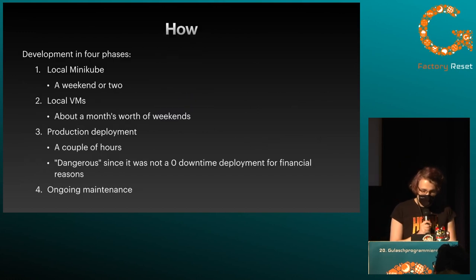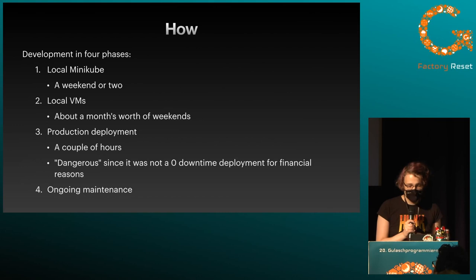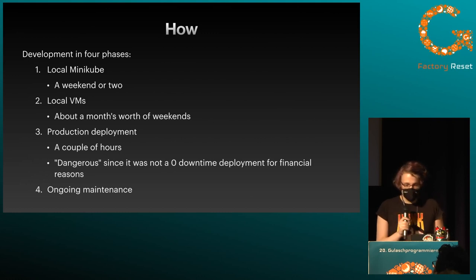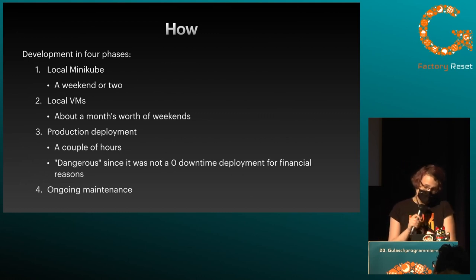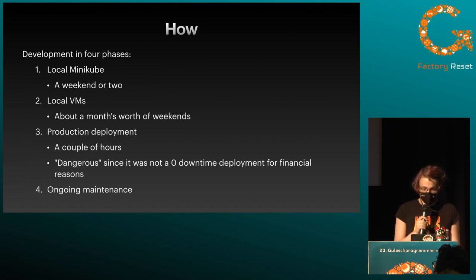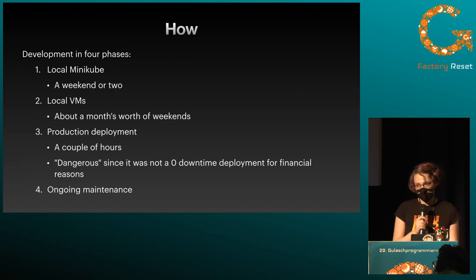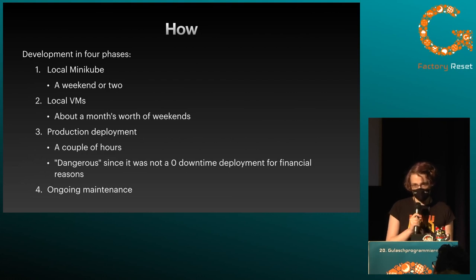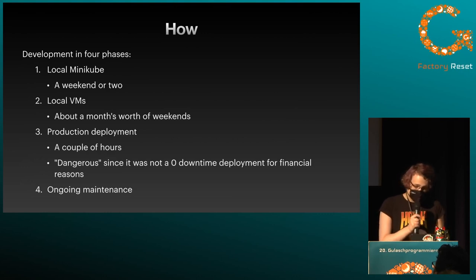How did I do this? I basically developed my infrastructure in four phases. In the first phase I had a local Minikube installed on my laptop, just to see the viability and test stuff out — a weekend or two. Then I switched to local VMs, which was about a month's worth of weekends. Then I deployed to production, which was only a couple of hours — it was dangerous since it was not a zero downtime deployment; I killed my old server before I deployed my Kubernetes cluster. And then we've got ongoing maintenance ever since.